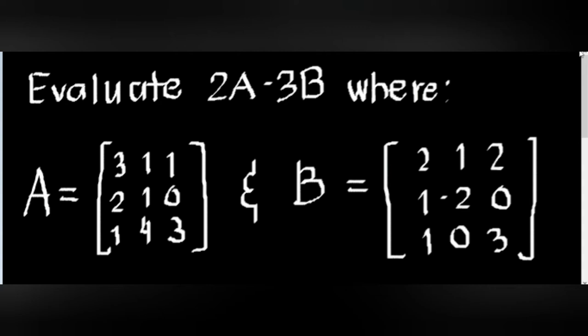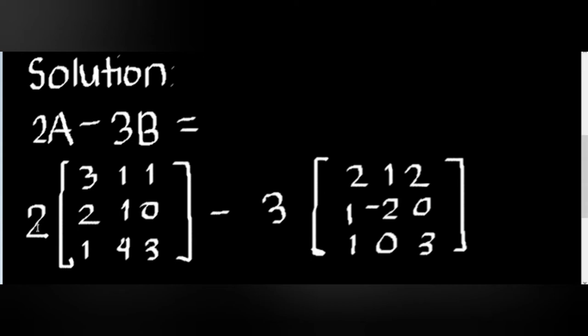And for the second topic, we have matrices. The given example is: evaluate 2A minus 3B, where matrix A is composed of 3, 1, 1, 2, 1, 0, and 1, 4, 3. And matrix B is 2, 1, 2, 1, 2, 0, and 1, 0, 3.